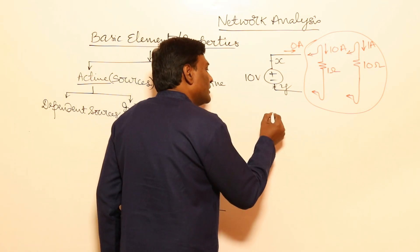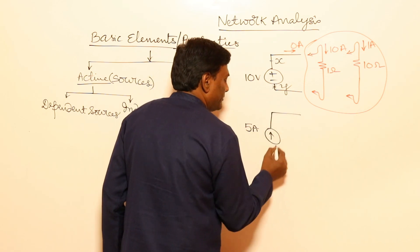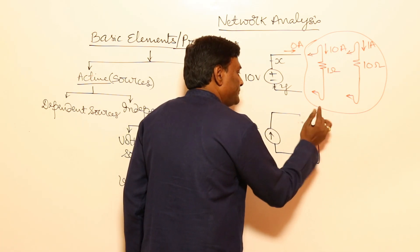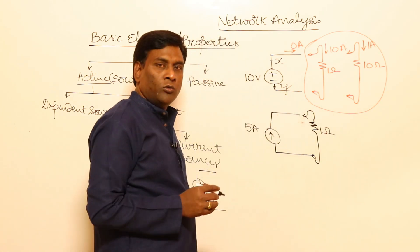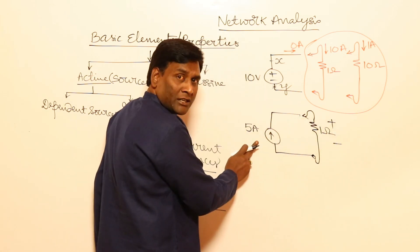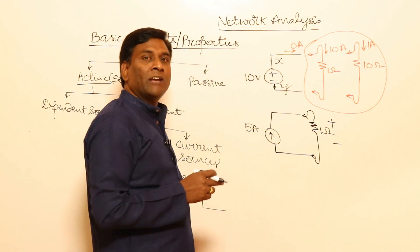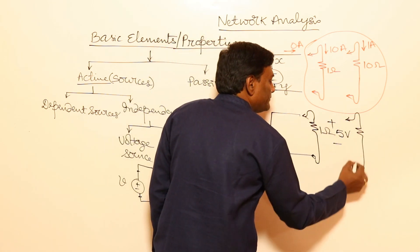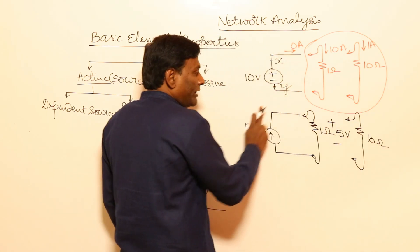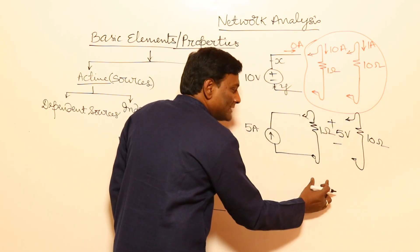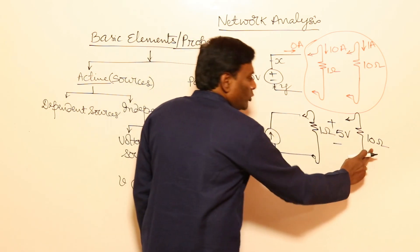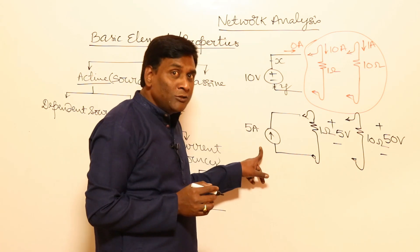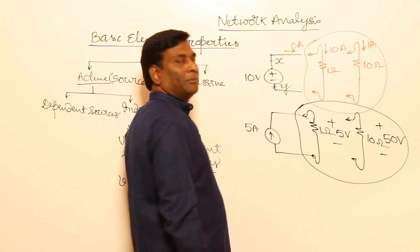If I think of a current source of 5 amperes — by definition, it is supposed to supply 5 amperes continuously. If I connect a load of 1 ohm, 5 into 1 is 5 volts. If I connect a resistance of 10 ohms, 5 into 10 is 50 volts voltage drop. So for a current source, current is known, but voltage across the current source will be decided by the connected system.